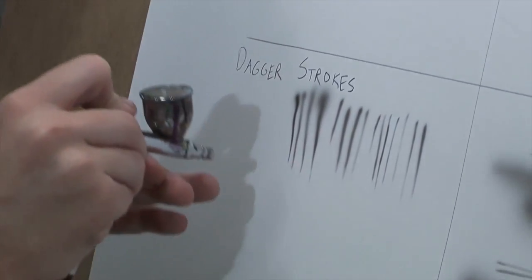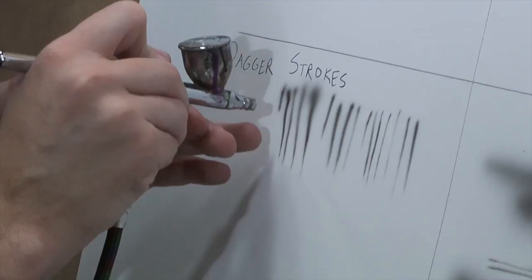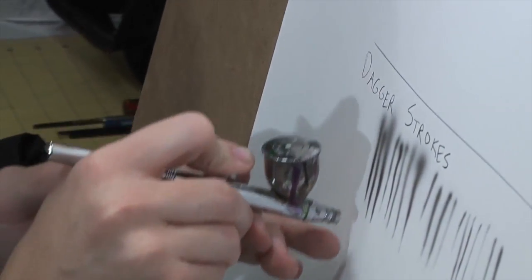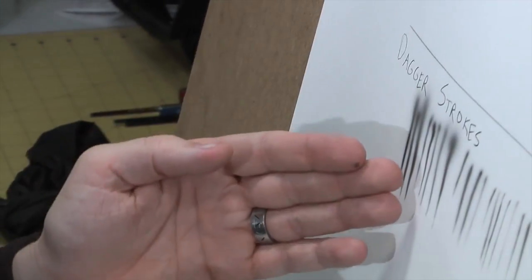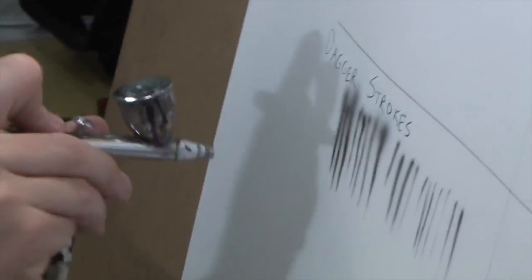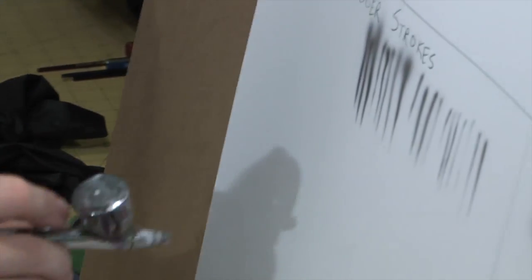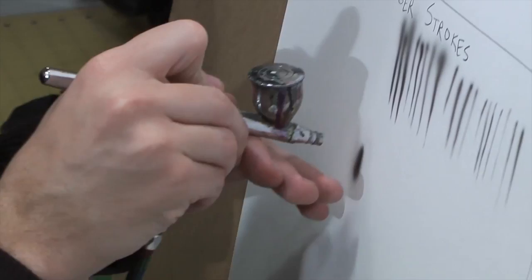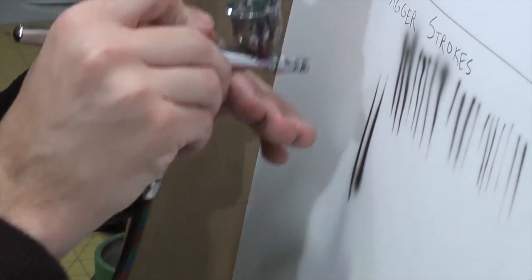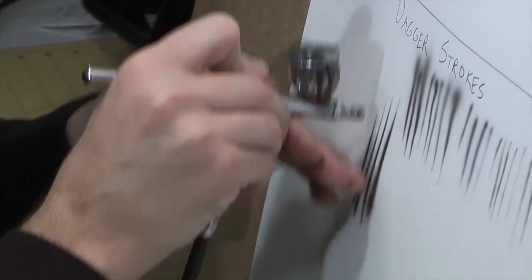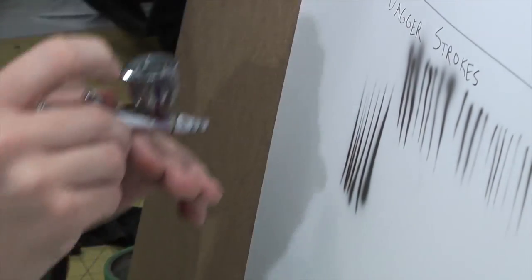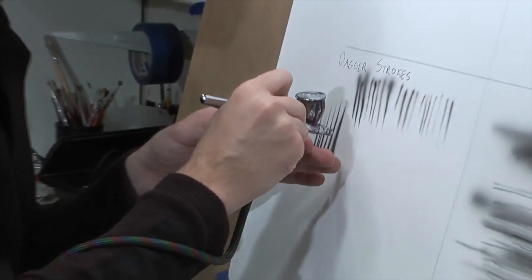This technique really helps you learn control on the amount of paint coming out. I'm doing this slowly so you can see what I'm doing. When you go too slow it gets a little crooked, your muscles start acting up. You can also do this backwards, upside down, and then you can also do it sideways.